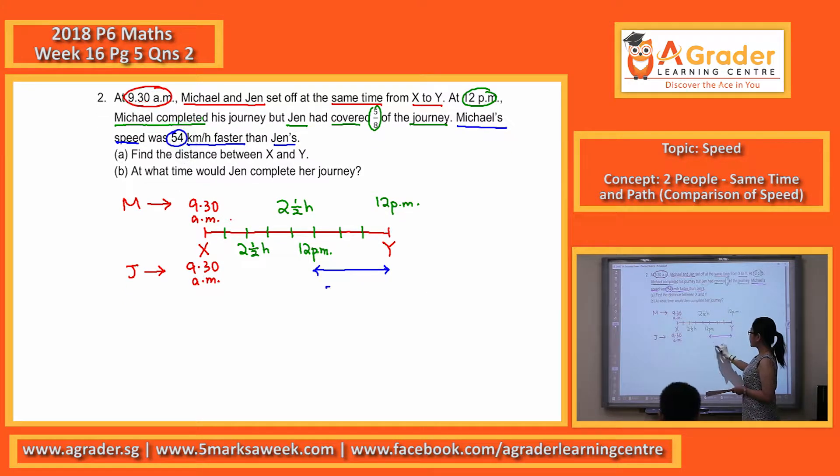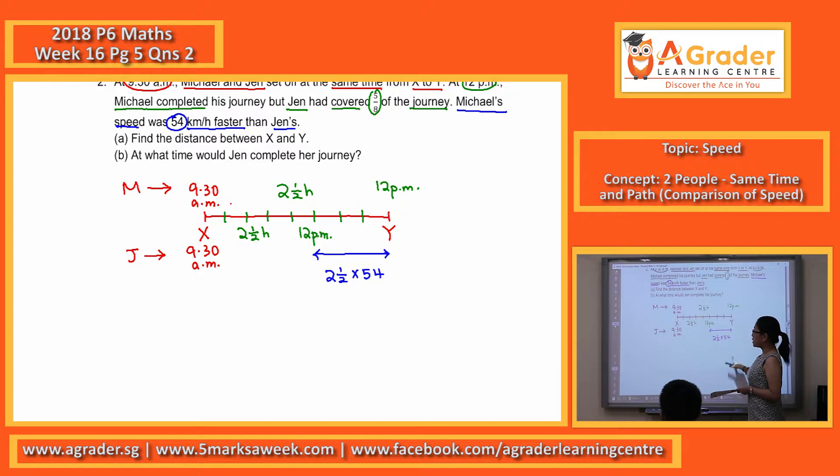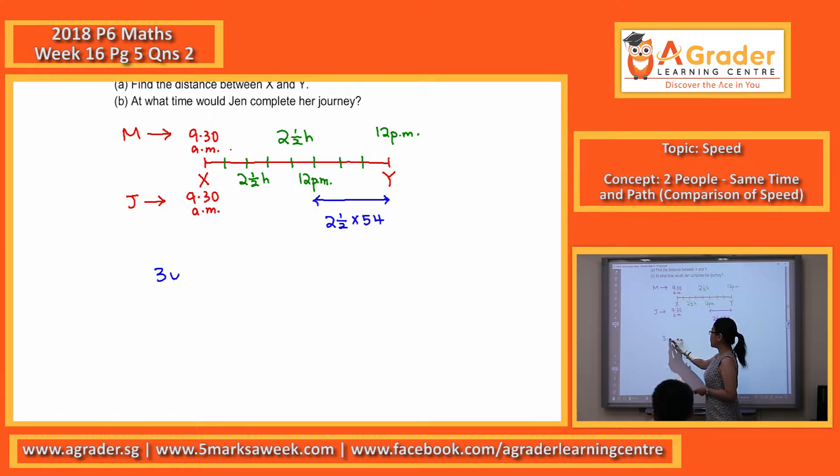you'll find the total distance that Michael is ahead, which will also be the 3 units here. So 3 units of the journey, 2.5 times 54, you will get 135 km.